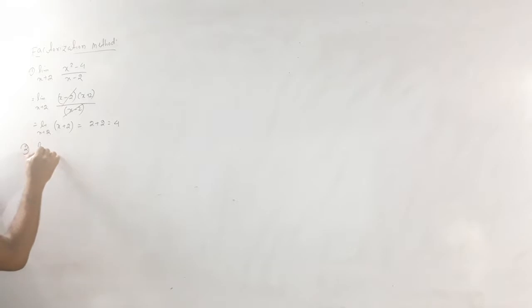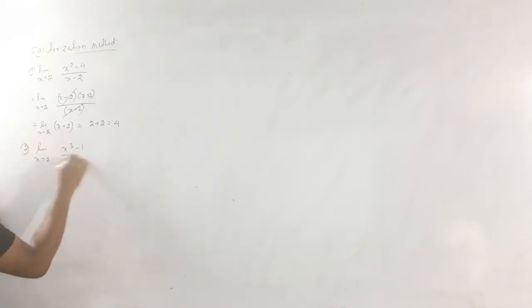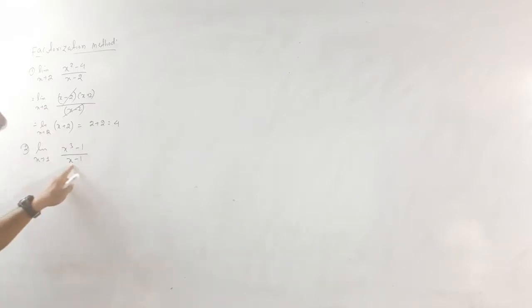The next question: limit x tends to 1, x cubed minus 1, divided by x minus 1. Applying the same logic, direct substitution gives 1 minus 1 equals 0 in both numerator and denominator, so we use the a³ minus b³ formula.